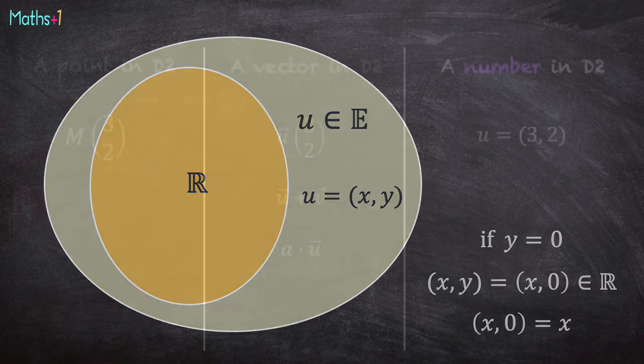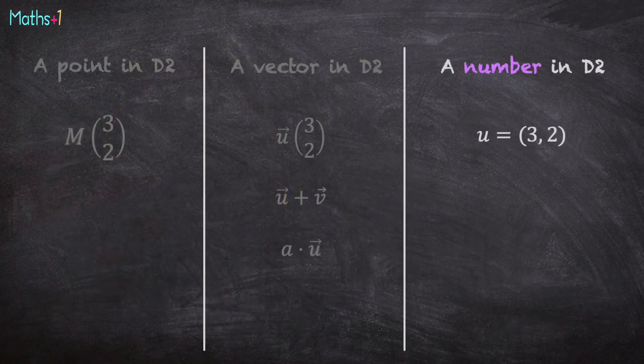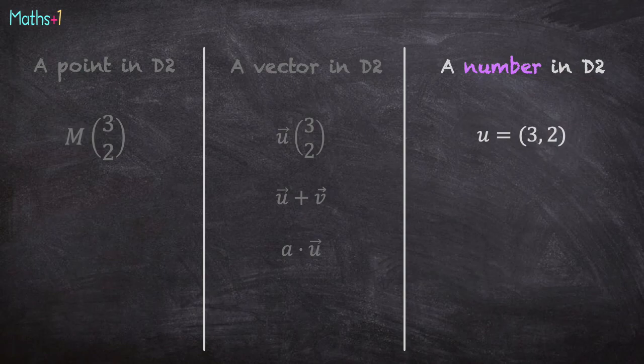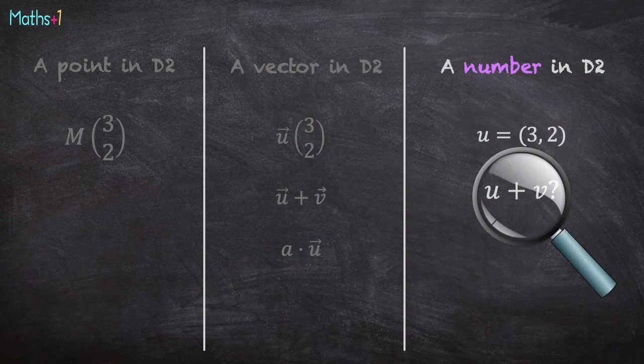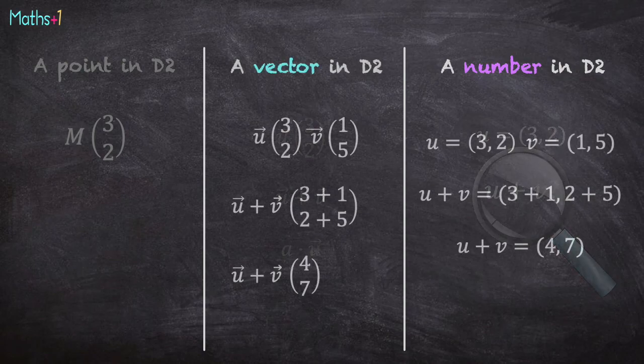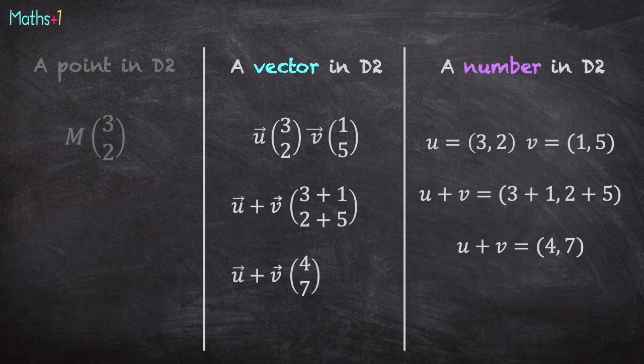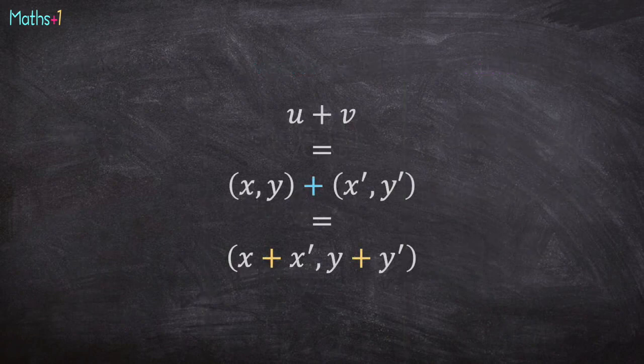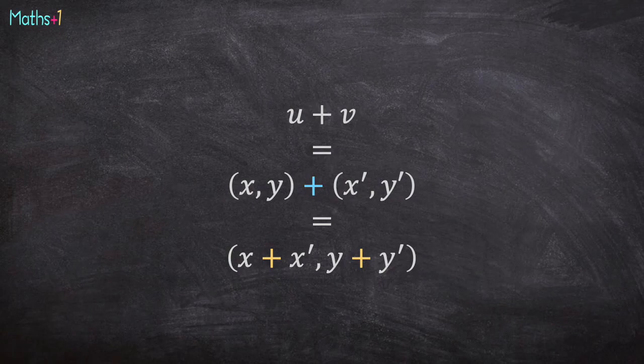Okay, we've got this new kind of number in dimension 2. For instance, u is (3, 2). But what about the addition? What does it mean to write u plus v? The first idea is to do exactly the same thing we use with vectors. So we obtain this formula: u plus v is (x, y) plus (x', y'), which is (x + x', y + y').